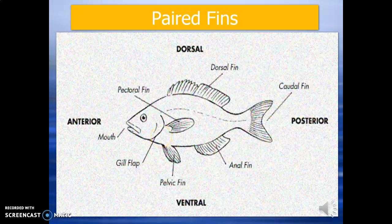So the fins are broadly classified into paired fins and unpaired fins. Here first we will see about paired fins. Paired fins include pectoral fins and pelvic fins. Paired fins always come in two pairs — you can see them on both sides of the fish.